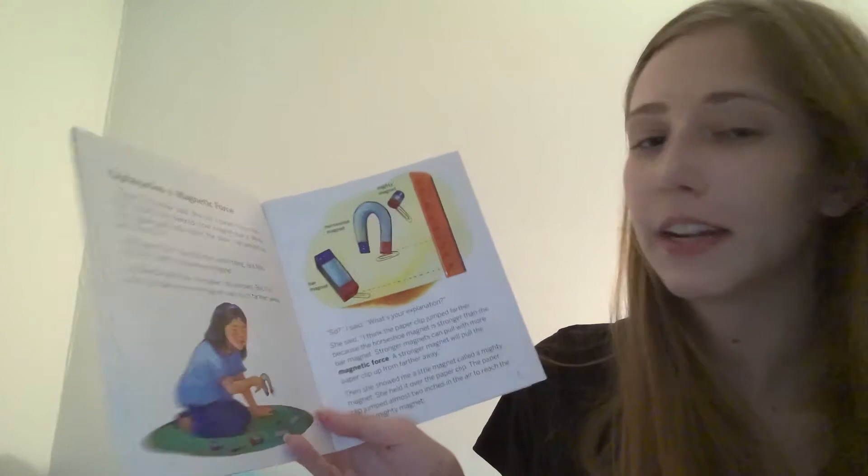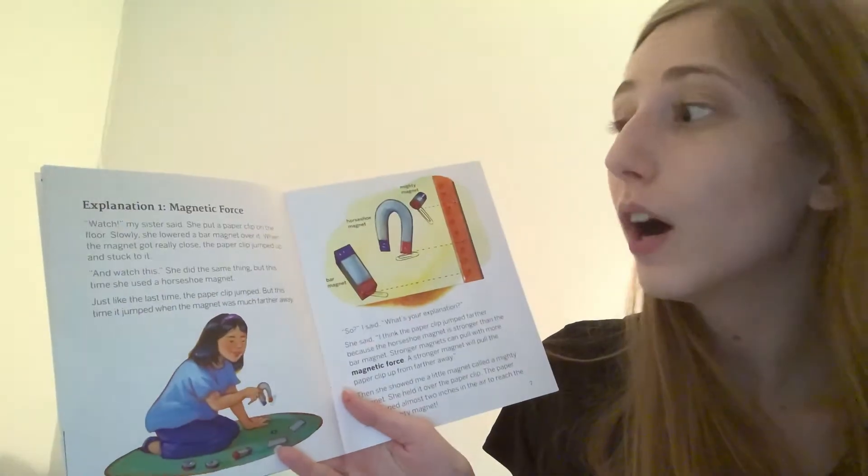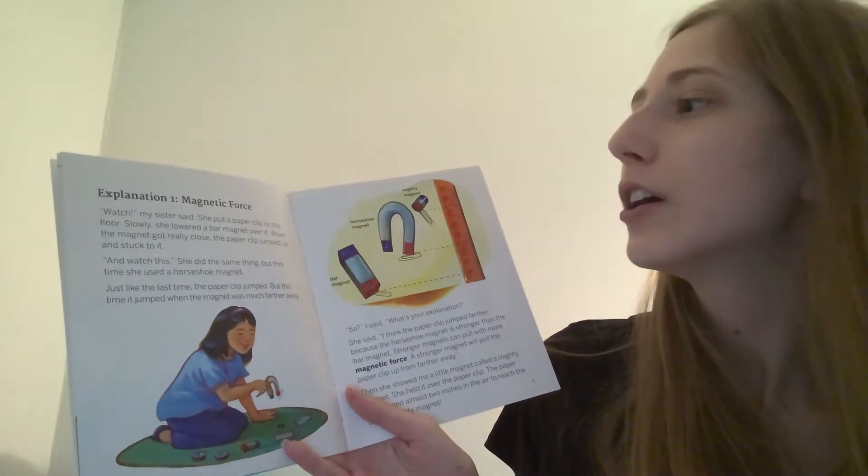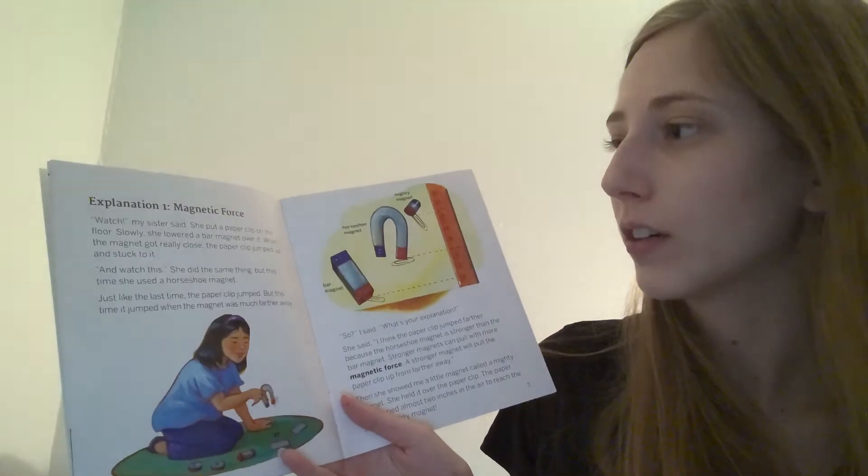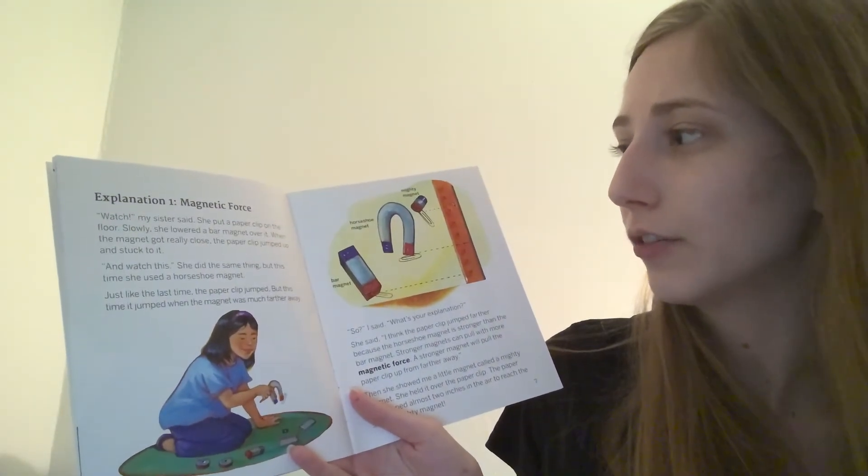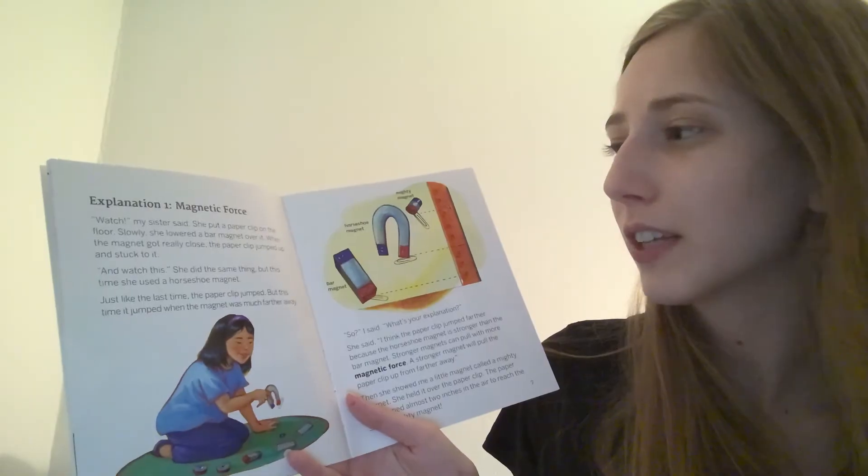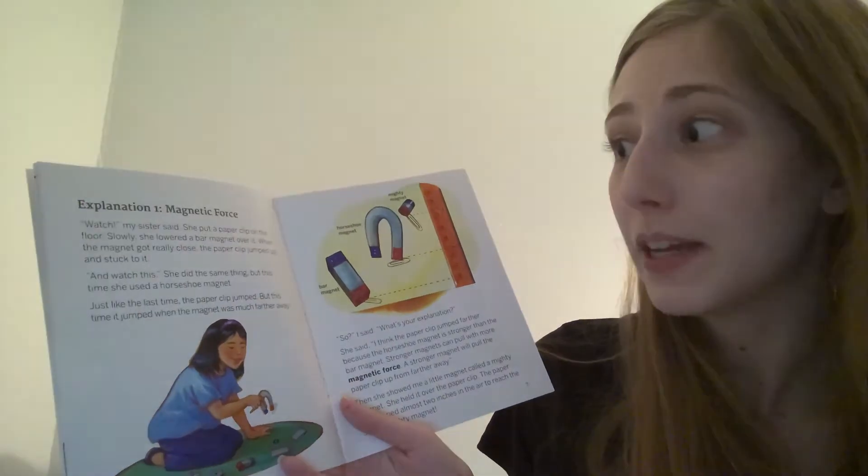Explanation 1. Magnetic Force. Watch, my sister said. She put a paper clip on the floor. Slowly, she lowered a bar magnet over it. When the magnet got really close, the paper clip jumped up and stuck to it.